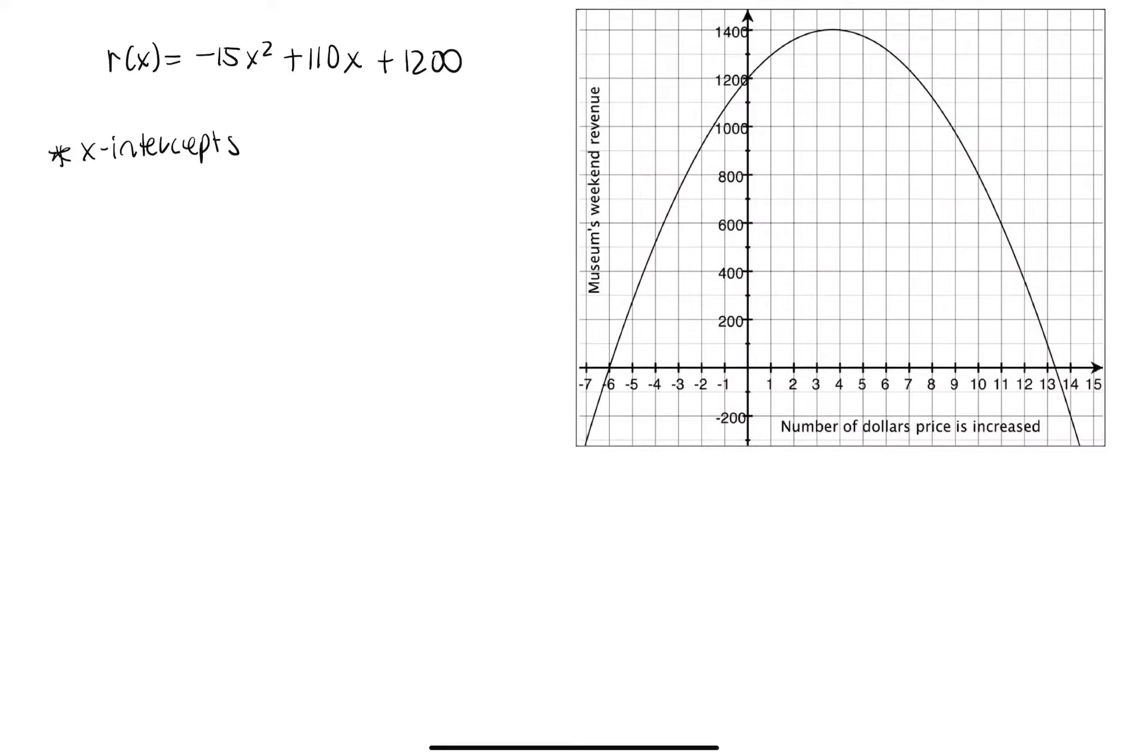Factoring always comes to mind, but if factoring is at all challenging, use the quadratic formula. That's x equals negative b plus or minus the square root of b squared minus 4ac divided by 2a.